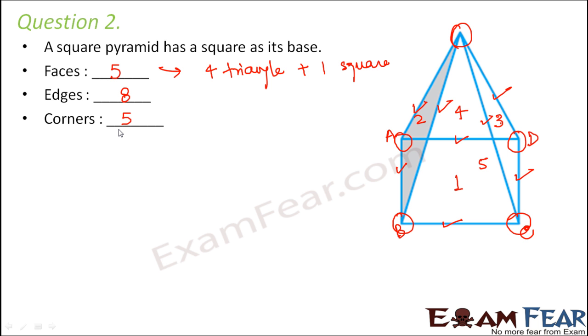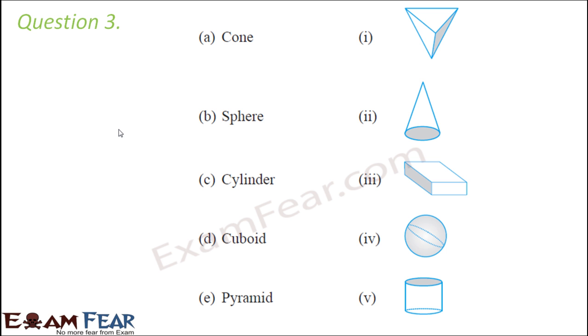Question number three: match the following. Here we have certain images and we have to tell the name of each of them. Cone - how does a cone look like? Whenever you think of a cone, think of an ice cream cone. It is like a circular base and then you have a triangular top, and it can be upside down as well. So this is a cone.